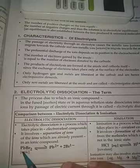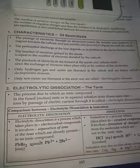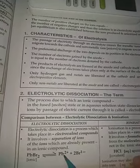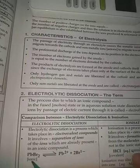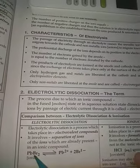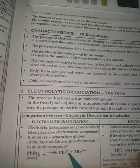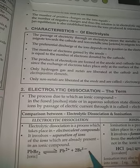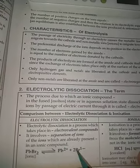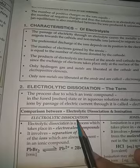For example, PbBr₂ is an ionic compound which is made up of lead ion and bromide ion. So Pb²⁺ lead ions are present and Br⁻ bromide ions are present. When it is dissolved in water, or if it is heated to its melting point, it dissociates to give Pb²⁺ and 2Br⁻ ions. When such ions are separated from a compound, this is called electrolytic dissociation.